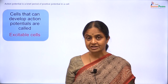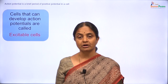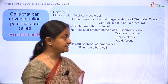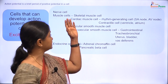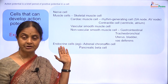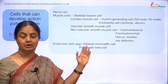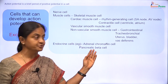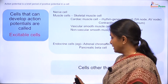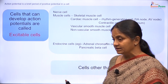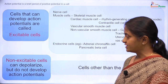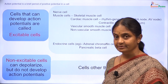Cells that can develop action potentials are called excitable cells. Here is a list of excitable cells: the nerve cell, different types of muscle cells, and even some endocrine cells which develop action potentials prior to exocytosis of the hormone. Cells that do not develop action potentials can be referred to as non-excitable cells.